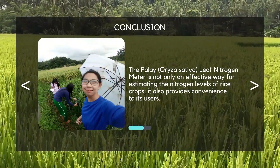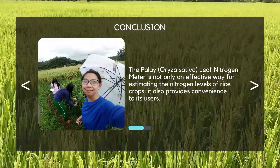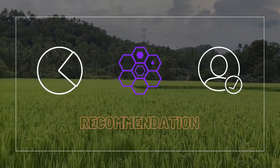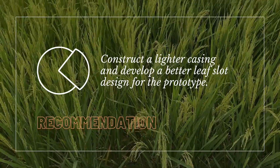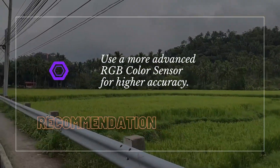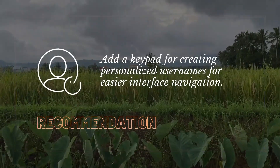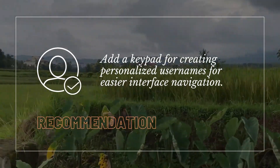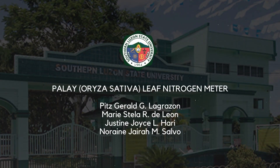The Palay Leaf Nitrogen Meter is not only an effective way of estimating the nitrogen levels of rice crops, it also provides convenience to its users. We recommend constructing a lighter casing and developing a better leaf slot design for the prototype. Use a more advanced RGB color sensor for higher accuracy and adding a keypad for creating personalized usernames for easier interface navigation.